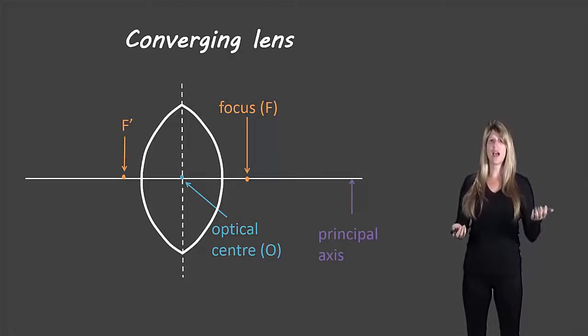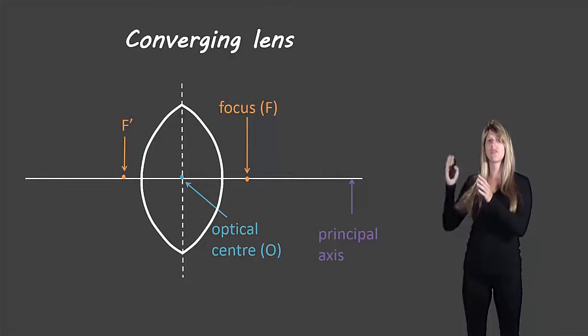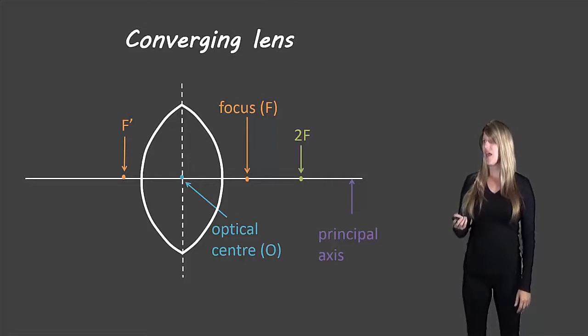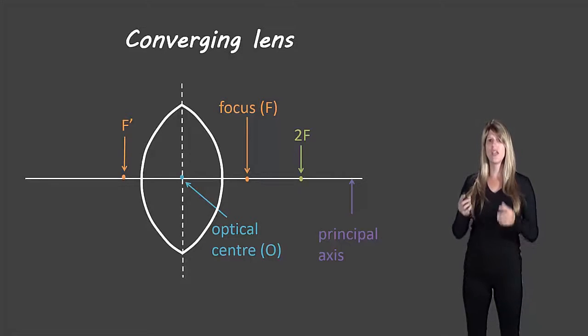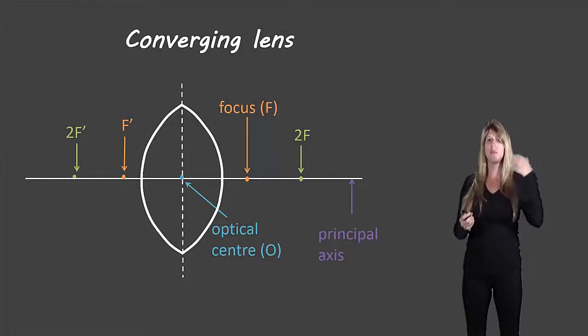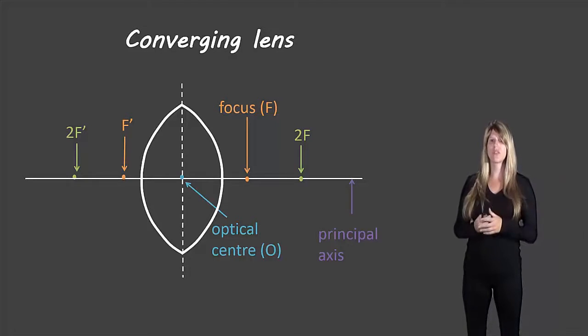On the other side there's something called F prime. F prime is the same distance from the optical center to the focus just on the other side of the lens. We then have a point called 2F. This is just double the distance of the focus to the optical center. This gives us another opportunity to describe locations of objects and images along the principal axis. And then we also have 2F prime on the other side of the lens at the same side as the F prime, just a little bit further along, twice the distance from the optical center to F prime.